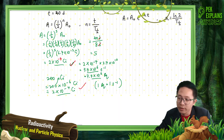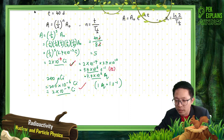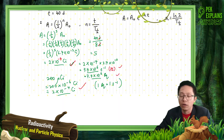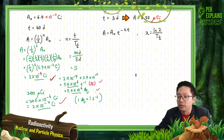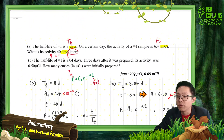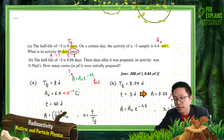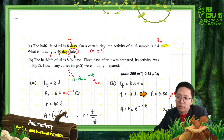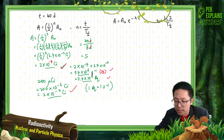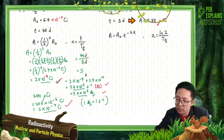This is the SI unit answer. If the question specifically asks for activity in per second, give the answer in per second. If not, you can leave it in curie. Now let us look at question B.